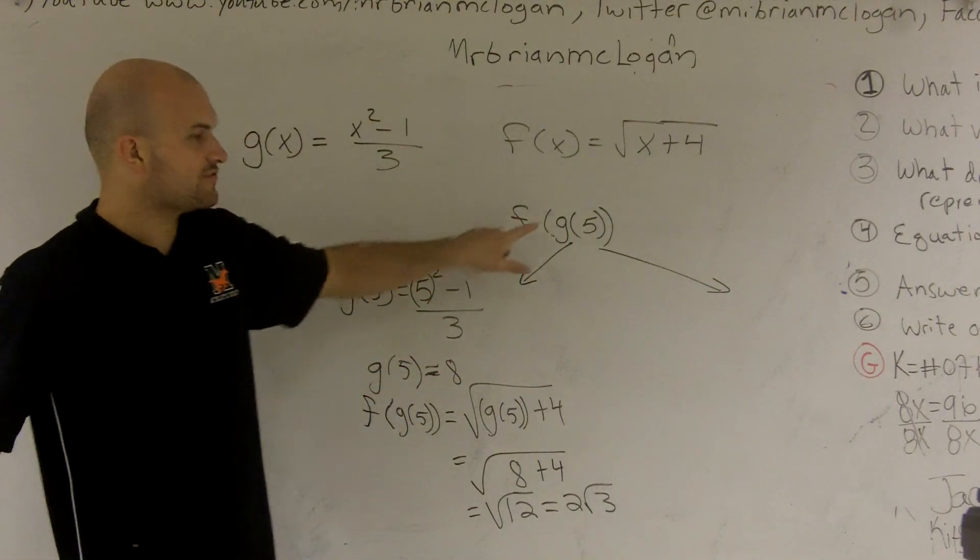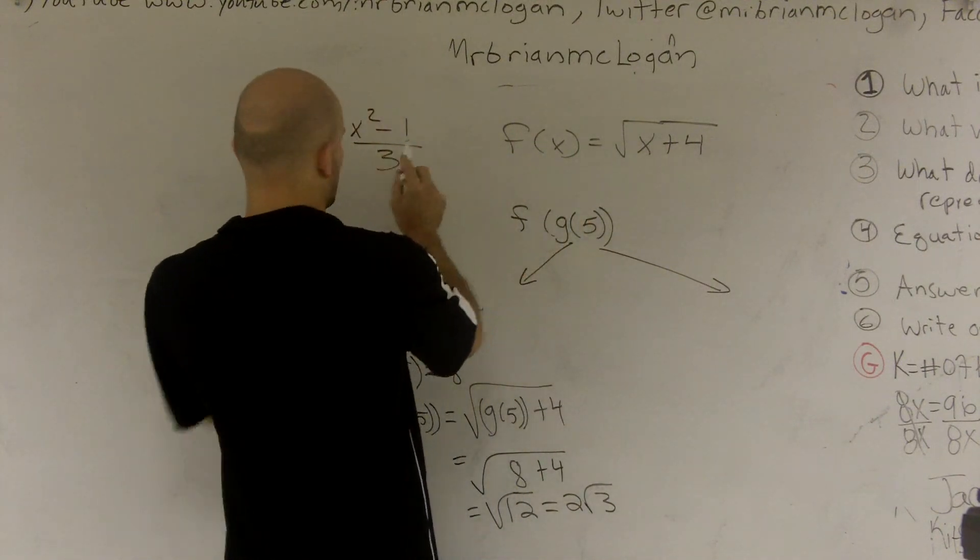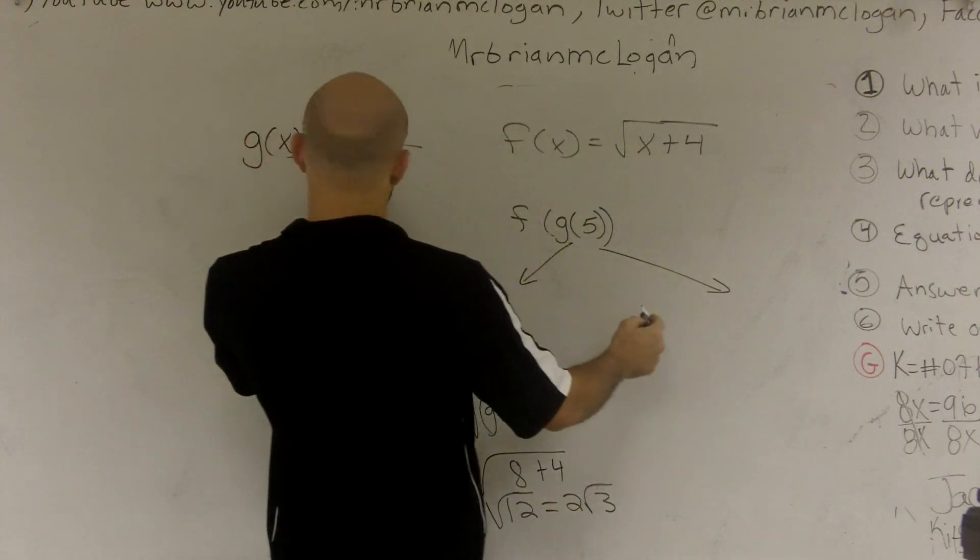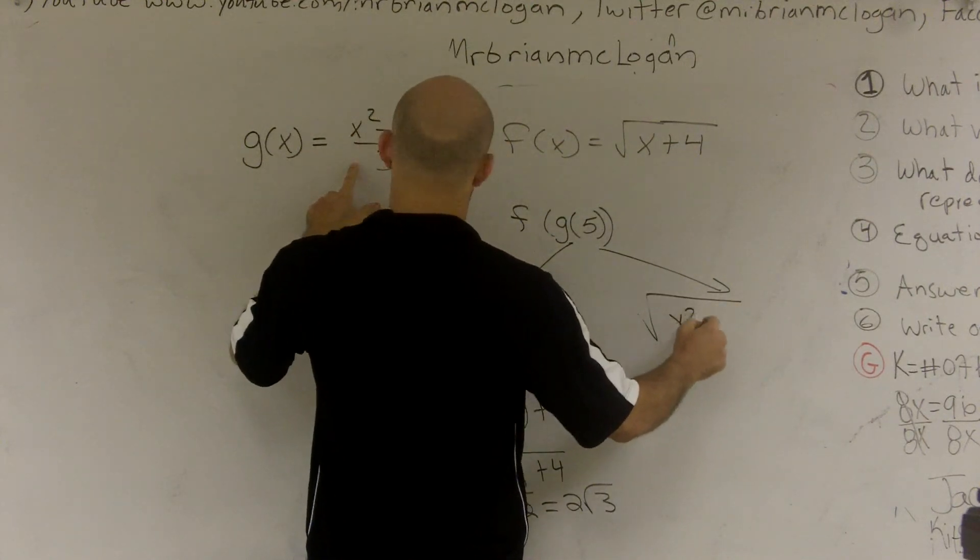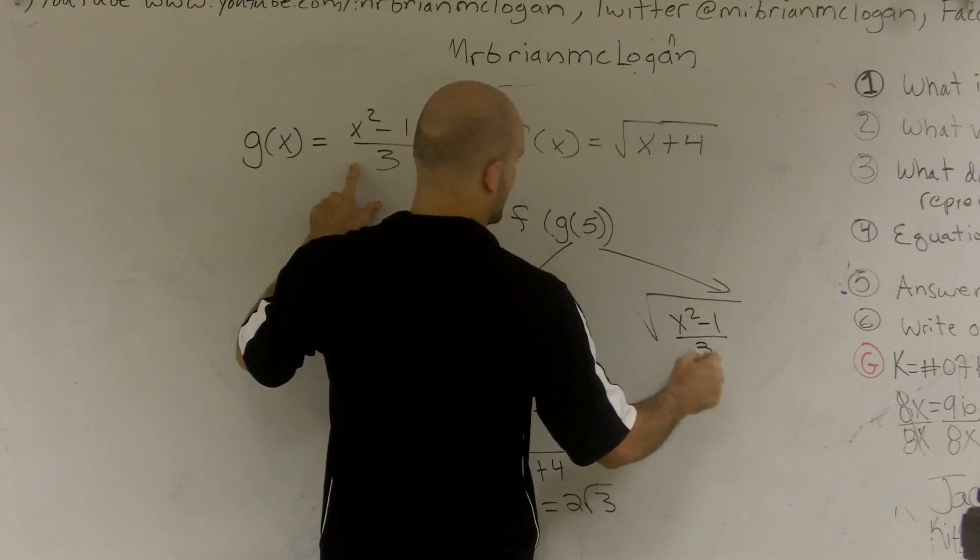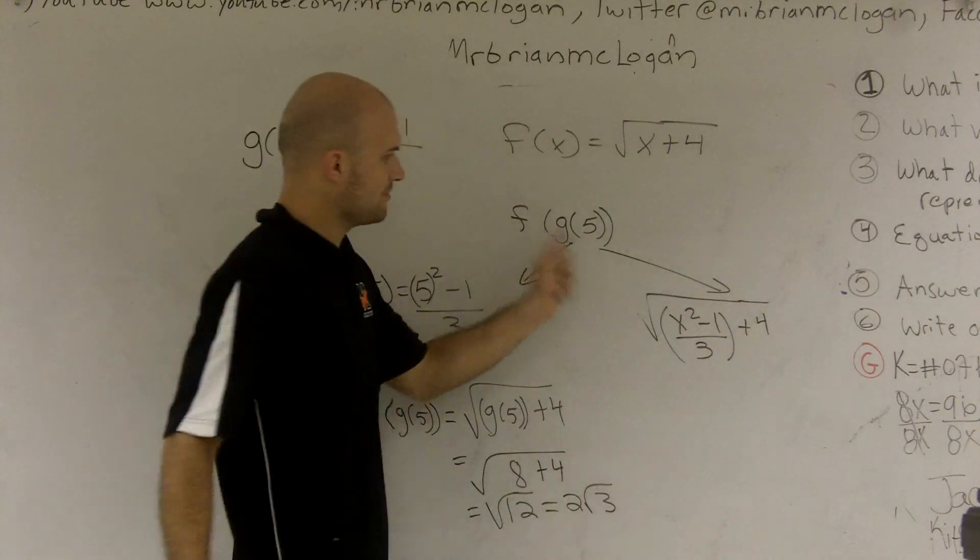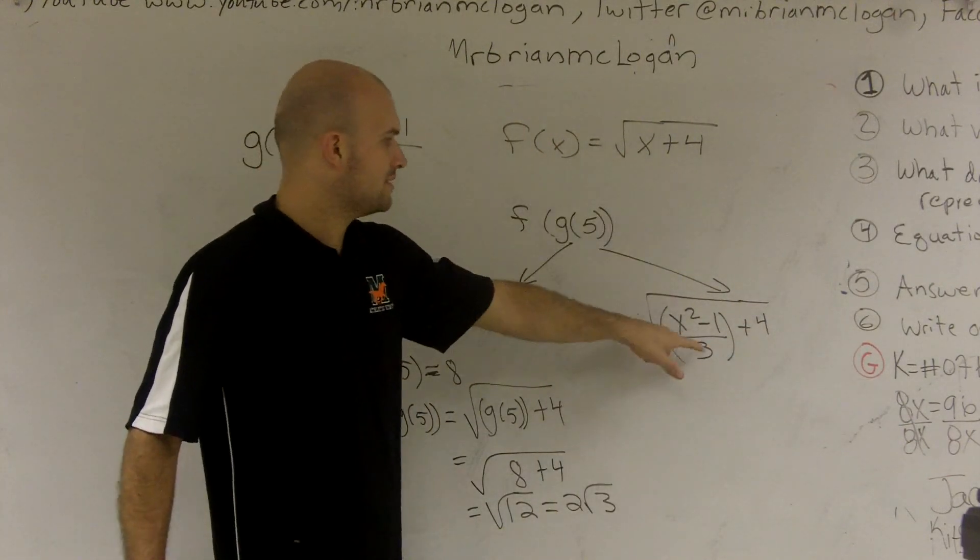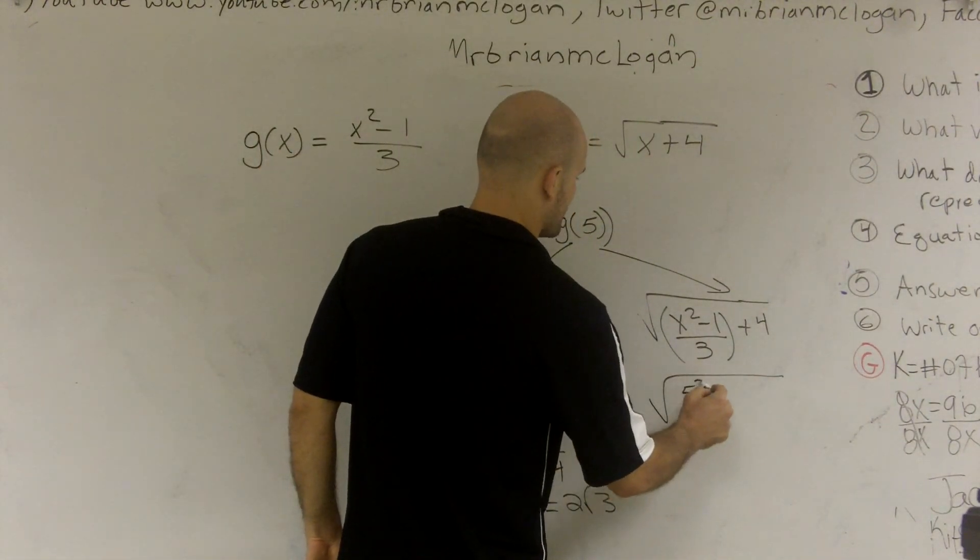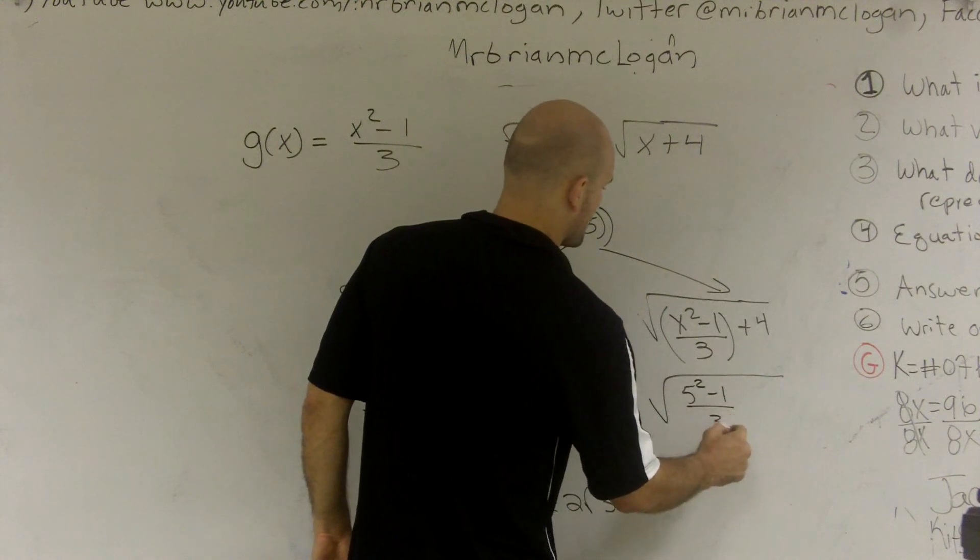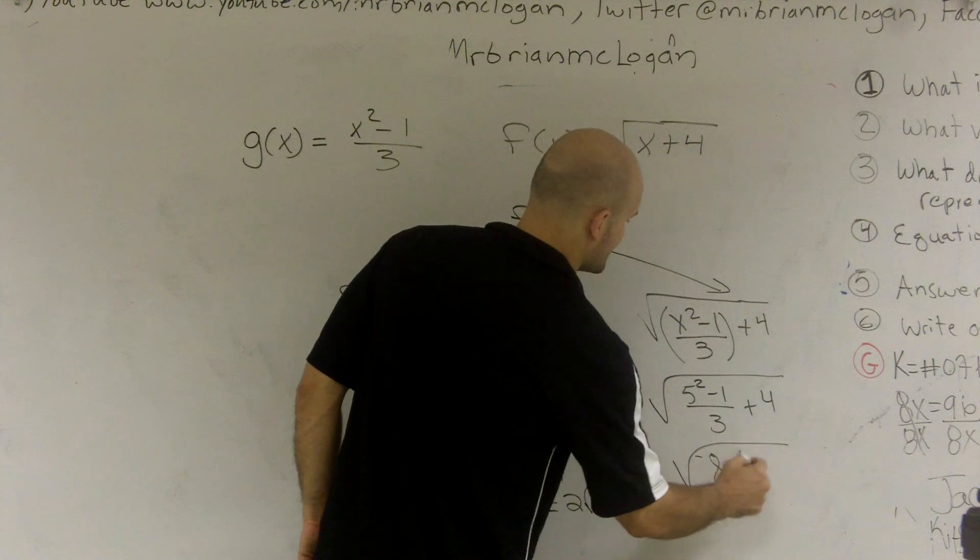The other way you can do it is you could first do composition. So I could first do, I could plug in what my g function is. So I could say square root of x squared minus 1 over 3 plus 4. So I could plug in my g of x function for x. And then it says to evaluate for 5. So then I could do 5 squared minus 1 over 3 plus 4. And that obviously equals 8 plus 4.